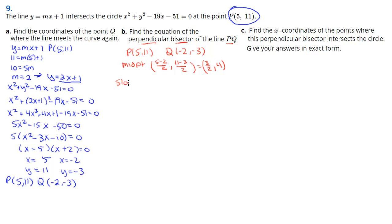Now the slope of pq is going to be (11 plus 3) over (5 plus 2), which gives me a slope of 14 over 7 or 2. Now I know my perpendicular slope is the opposite reciprocal, that's negative 1/2. So I've got a slope now and I've got a point, the midpoint, 3/2, 4.